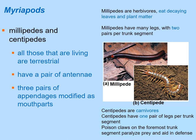Myriapods — centipedes and millipedes — are all terrestrial. They have one pair of antennae and three pairs of appendages modified as mouthparts. Millipedes are herbivores with two pairs of legs per segment; centipedes are carnivores with one pair of legs per segment. Centipedes also have poison claws to paralyze prey and defend against predators.